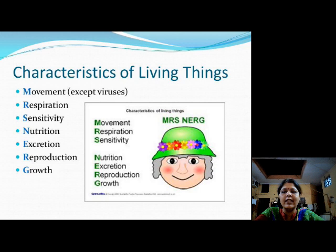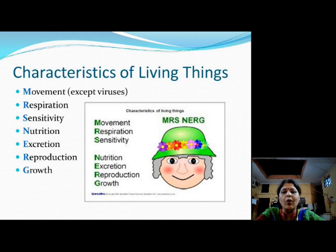Coming on to the first characteristic, that is movement. All living organisms, whether it be plants, animals, and microorganisms, they are showing the signs of movement. They can all move their body parts. Except viruses — the viruses are not showing the characteristics of living beings unless they are infecting any host. They show all characteristics of living beings only when attached to a host; otherwise they are in the form of a crystal. So it is a contradictory point whether a virus is living or non-living.